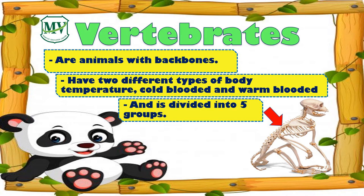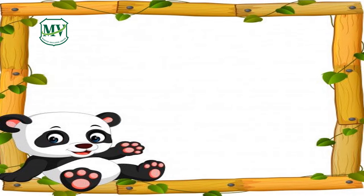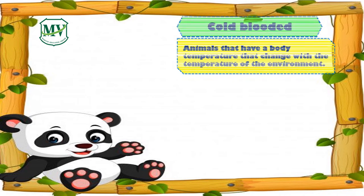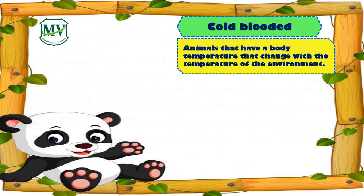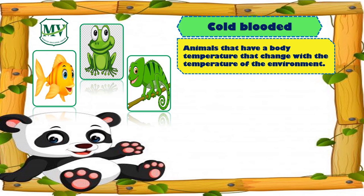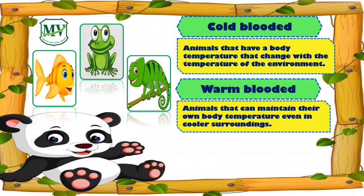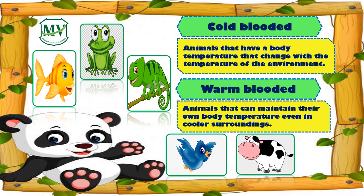Vertebrates are divided into five groups. First, let's discuss the difference between cold-blooded and warm-blooded animals. Cold-blooded animals are animals that have a body temperature that changes with the temperature of the environment, like fish, frog, and iguana. While warm-blooded animals are animals that can maintain their body temperature even in colder surroundings, like birds and cows.